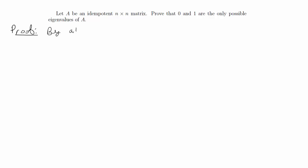We can say, by assumption, A is an idempotent n by n matrix. We know that the definition of that is basically that if you multiply A by A, you still get A. We can say, therefore, A squared equals A.